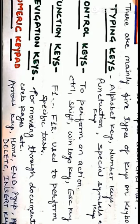The second type of keys are control keys. Control keys are either used alone or in combination with other keys to perform an action. Many control keys are present on the keyboard, like the Control key, Alt, Windows Logo key, and Escape key. The next type of keys is function keys. Function keys are used to perform specific tasks and are placed on the top row of the keyboard, labeled F1, F2, F3, F4, through F12. These keys have different functions in different programs.